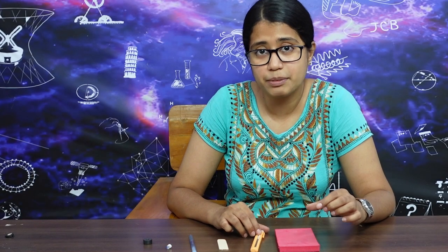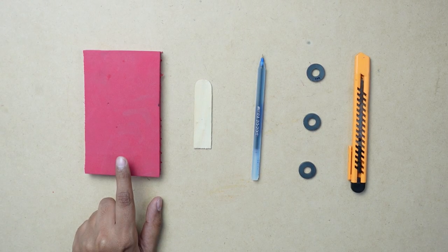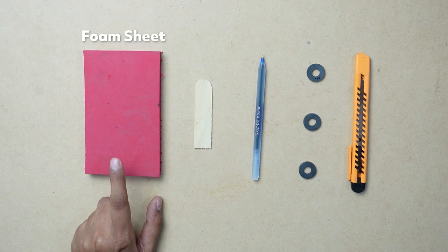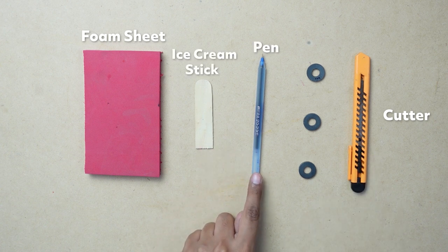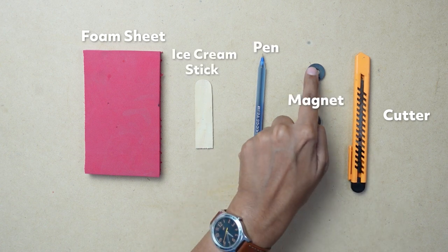For this levitating pen we need an EVA sheet, a cutter, an ice cream stick, a pen, and three ring magnets. Just keep in mind that you should use an old pen. If you cut a new pen, you might regret it.